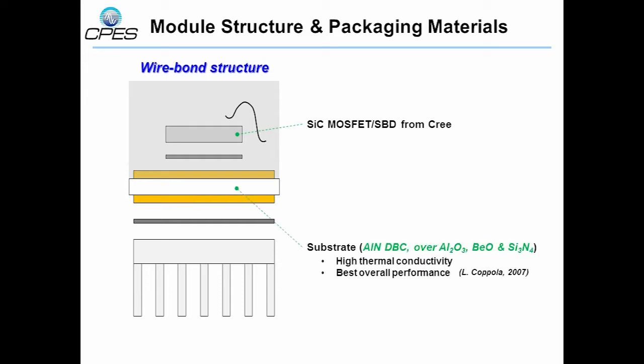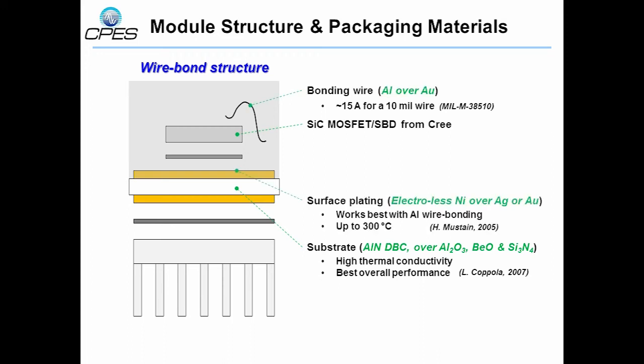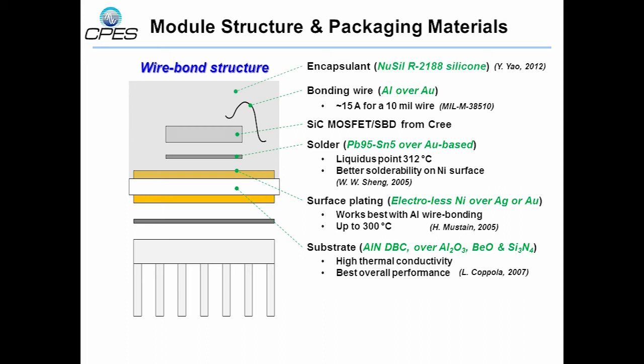The module consists of the aluminum nitride direct-bonded copper substrate, the aluminum bonding wire, electrolytically plated nickel-boron surface on the substrate, high-temperature thin die solder for the die attachment via vacuum reflow process, and high-temperature silicone material as the module encapsulant. The whole module is finally attached to the aluminum heat sink with thermally conductive adhesive.